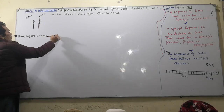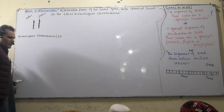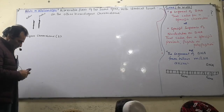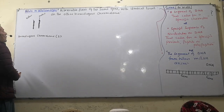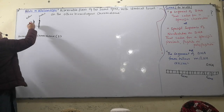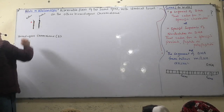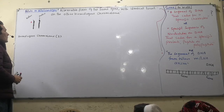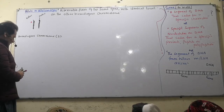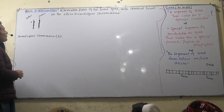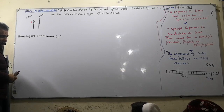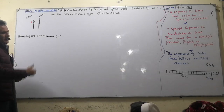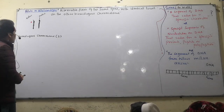For example, homologous chromosomes — chromosome number 1 pairs with chromosome number 1. If we examine chromosome number 1, each homologous pair shares the same number designation.